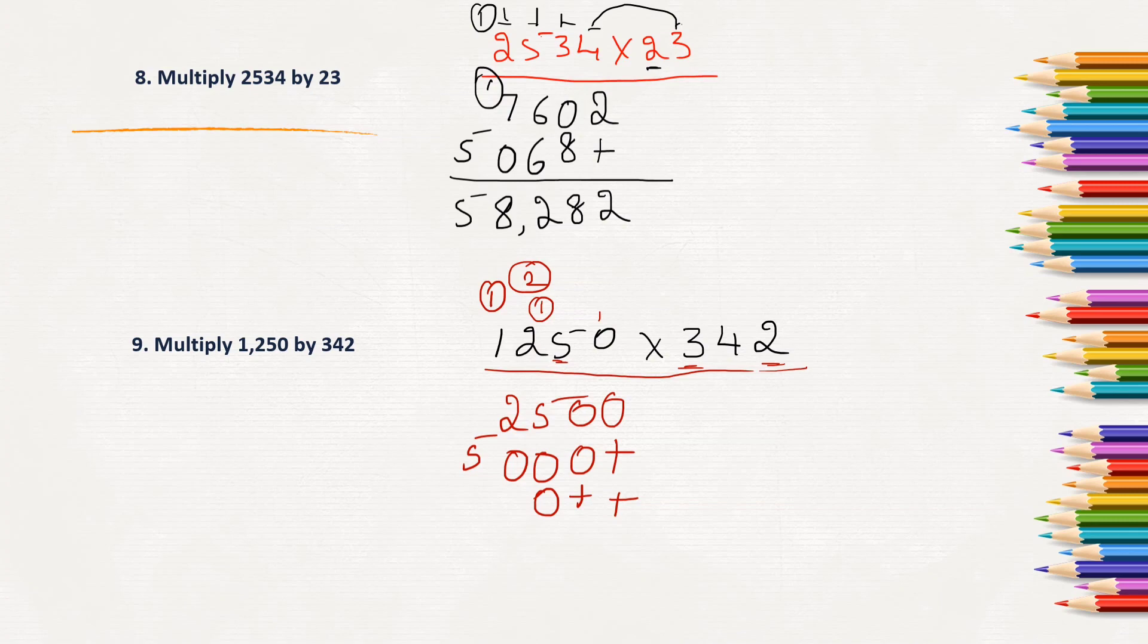3 times 5 is 15, 5 here, 1 carry. 3 times 2 is 6, 6 plus 1, 7. 3 times 1 is 3. Be careful while carrying. You should be careful. You have to add the carried number.